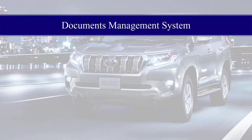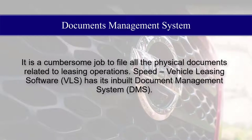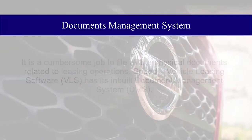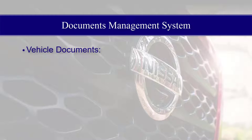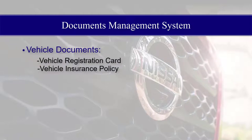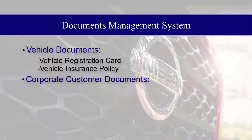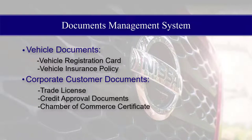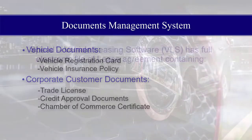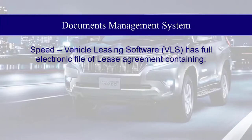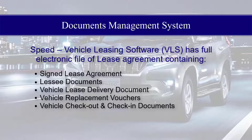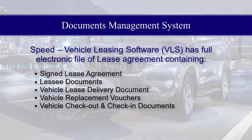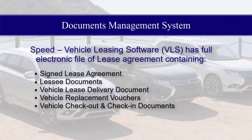Documents Management System. It is a cumbersome job to file all the physical documents related to leasing operations. Speed Vehicle Leasing Software (VLS) has its inbuilt Document Management System (DMS), covering Vehicle Documents such as Vehicle Registration Card and Vehicle Insurance Policy, Corporate Customer Documents such as Trade License, Credit Approval Documents, and Chamber of Commerce Certificate. VLS has a full electronic file of the lease agreement containing the Lease Agreement, Lessee Documents, Vehicle Lease Delivery Document, Vehicle Replacement Vouchers, and Vehicle Checkout and Check-in Documents.